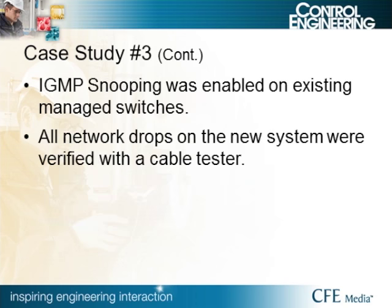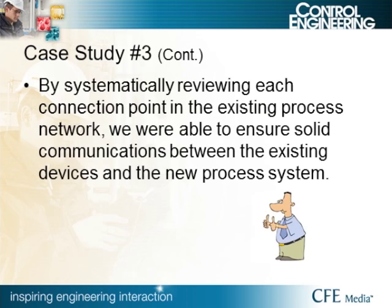We enabled IGMP snooping to contain broadcast storms. All connectors were re-checked and reinstalled, verified with a cable verifier, and we provided a verification printout of all connectors checked. All new network drops in the new system were verified with our cable tester as well. By systematically reviewing each connection point, we ensured a solid communications path between the existing system and the new process system, giving us confidence that when controlling field devices everything would work as intended.